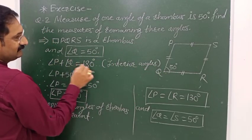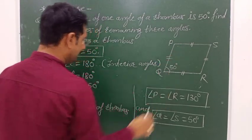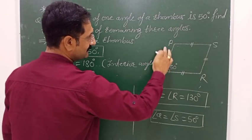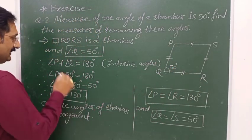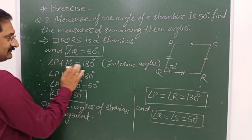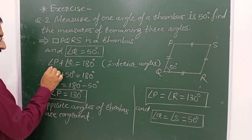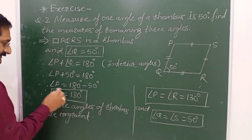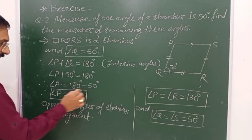Angle P plus angle Q equals 180 degrees, because PS and QR are parallel lines and PQ is the transversal. The sum of interior angles on the same side equals 180 degrees. Therefore, angle P plus 50 equals 180.